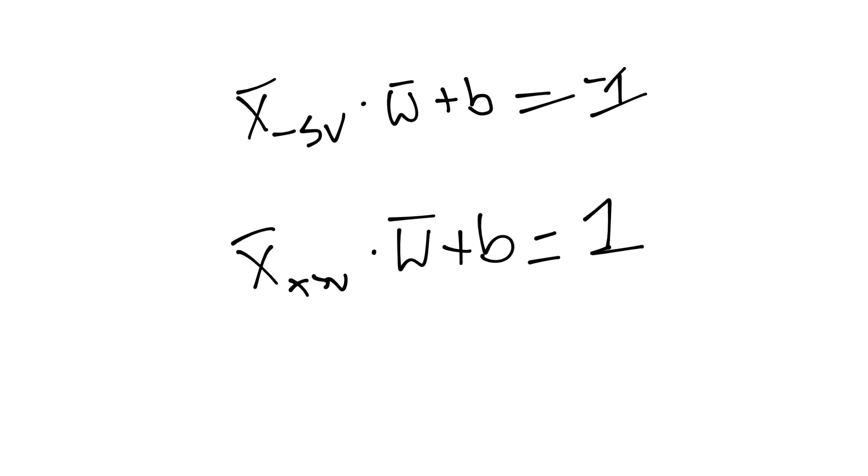How can we make an equation to go through our data and actually locate support vectors? Now we introduce y sub i and y sub i is simply the class of the features that we're passing through. If the class is a plus class, then y sub i equals positive one. If y sub i is of the minus class, then y sub i equals negative one.